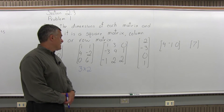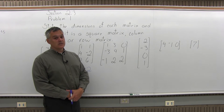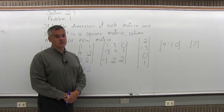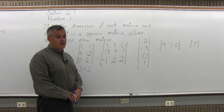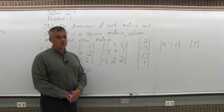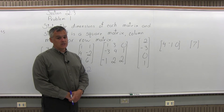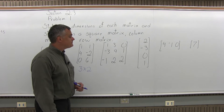Is it a square matrix? No, because it does not have the same number of rows as columns. Is it a column matrix? No, because it does not have only 1 column. And is it a row matrix? No, because it does not have only 1 row.